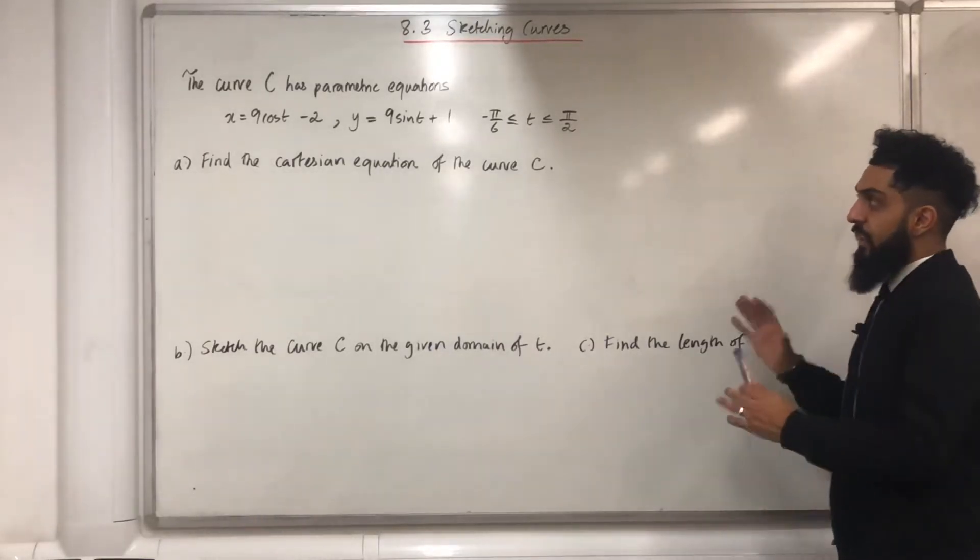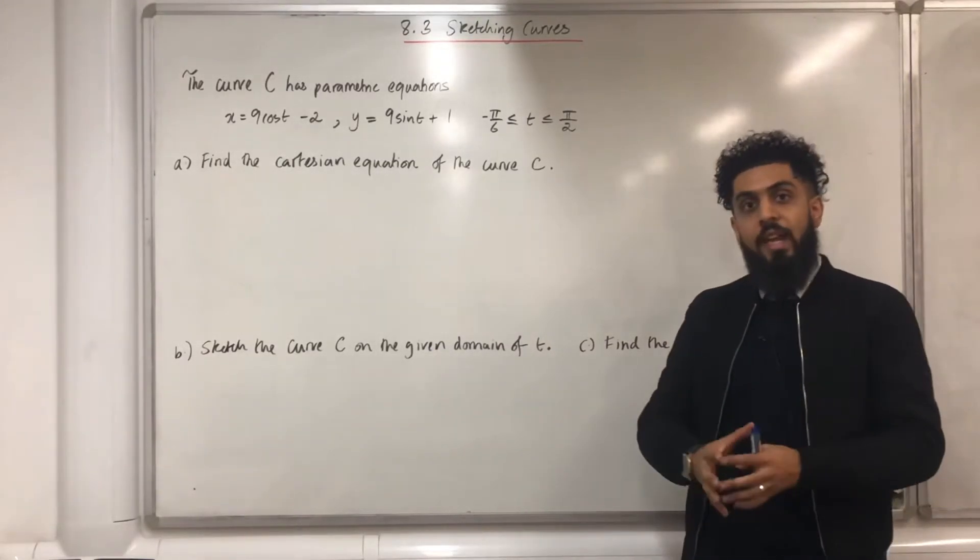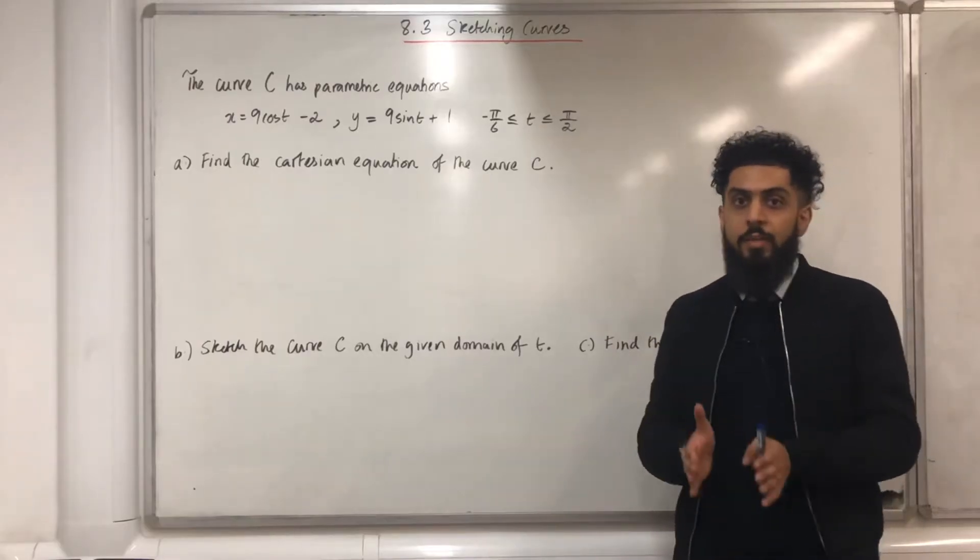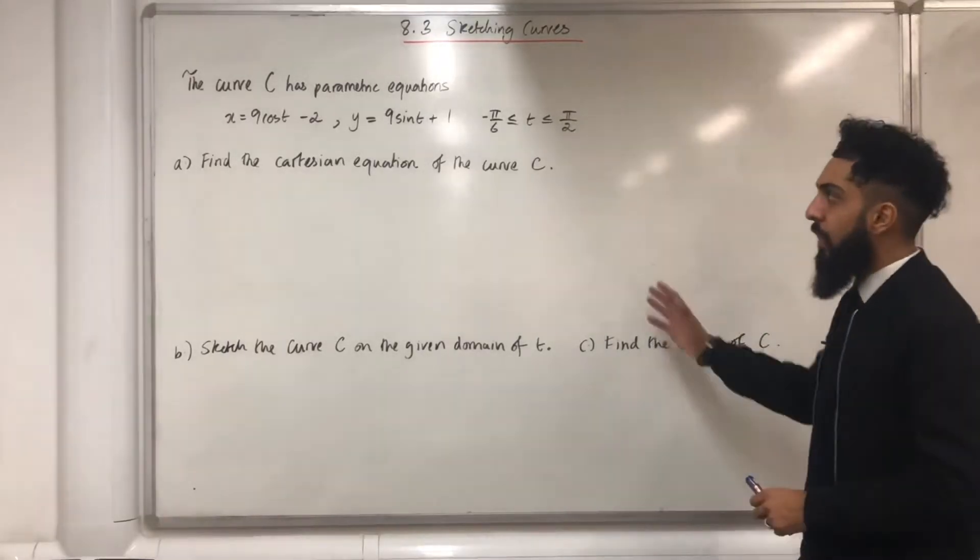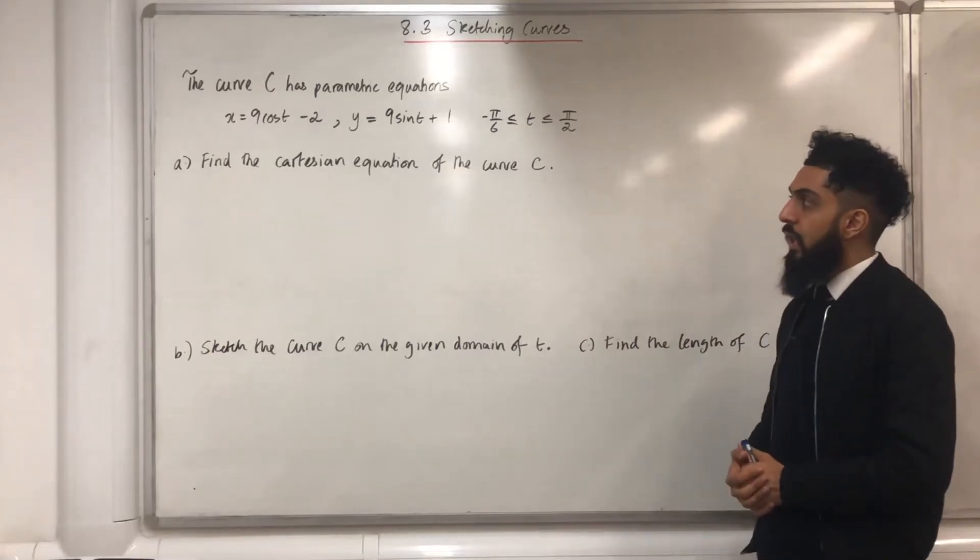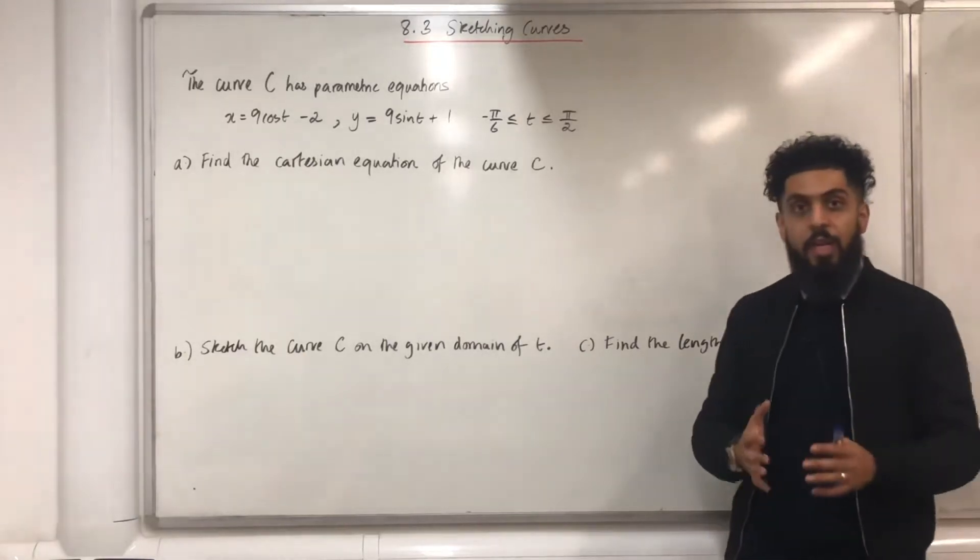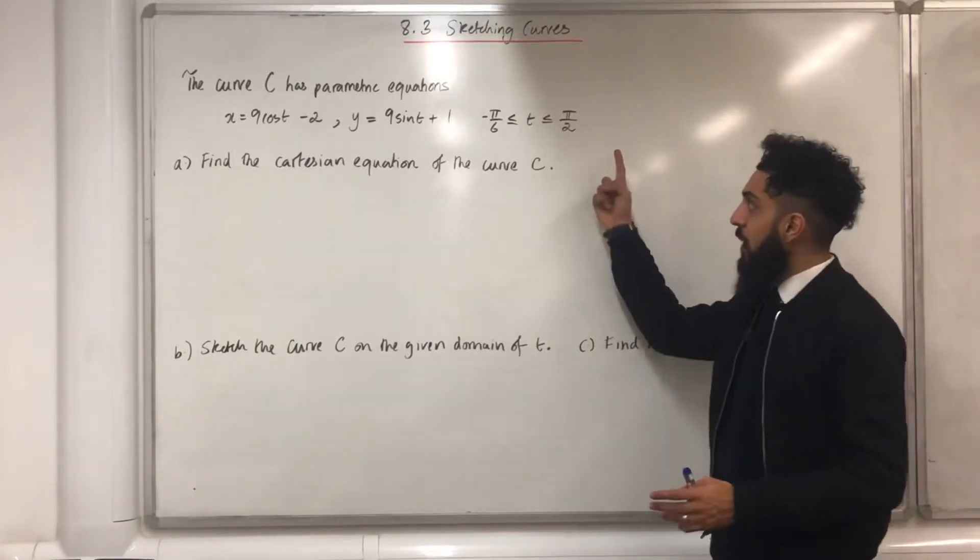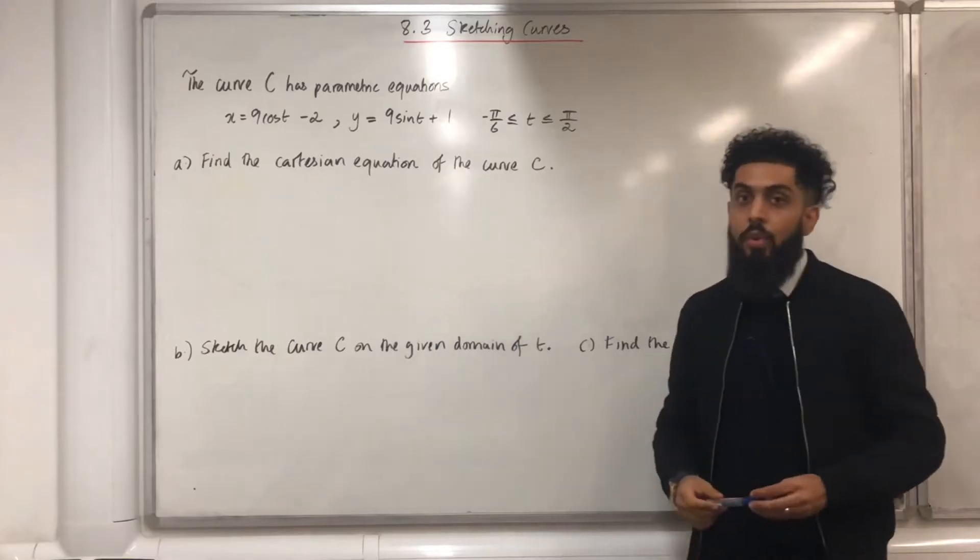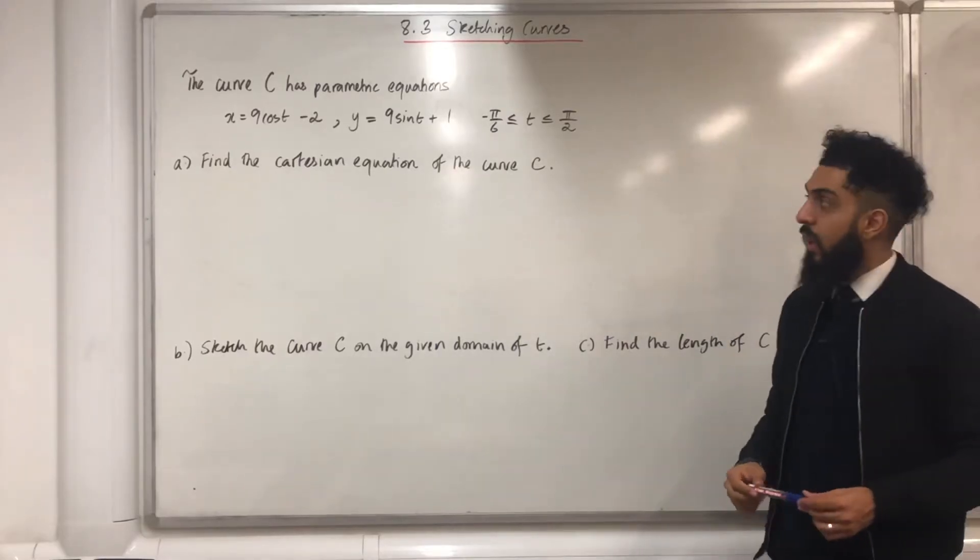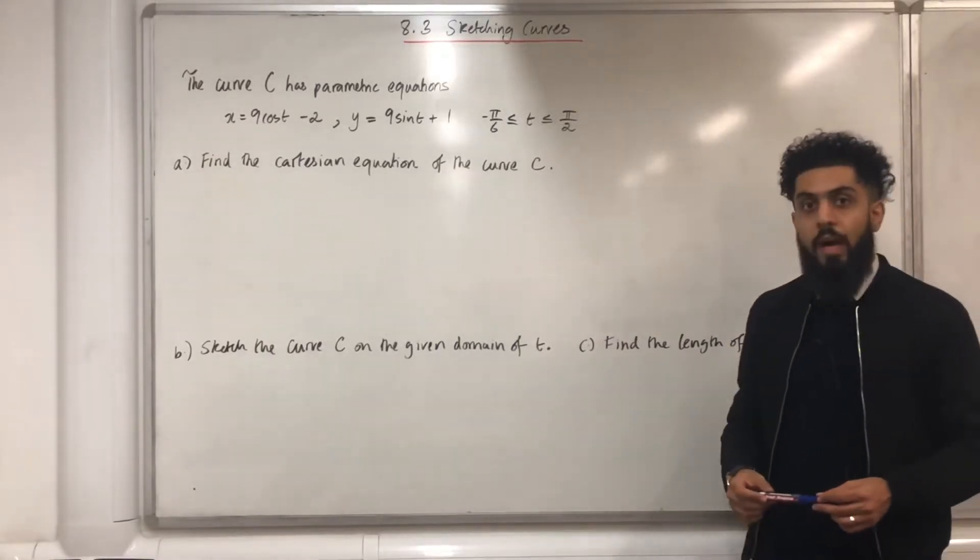Now this particular section is all about sketching any given curve C for a given domain of t. Here's a past exam question. The curve C has parametric equations x equals 9 cos t minus 2, y equals 9 sin t plus 1, and the domain of t, ladies and gents, is given over here. T is more than or equal to minus pi over 6, but less than or equal to pi over 2.